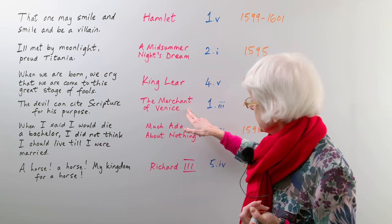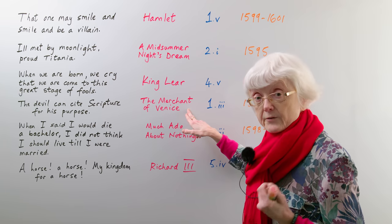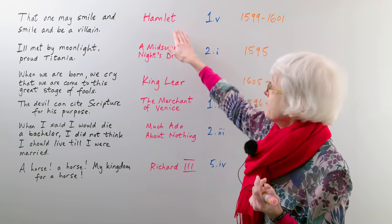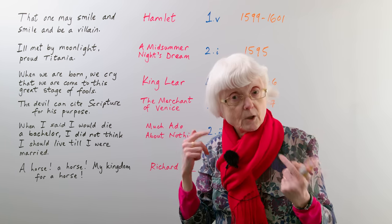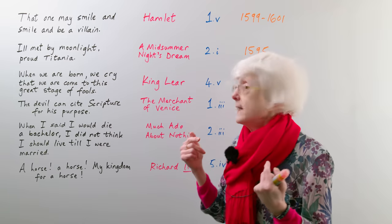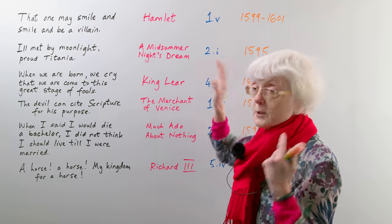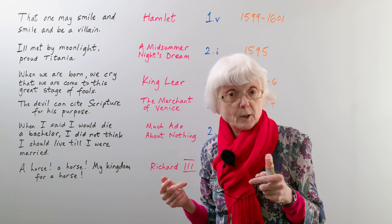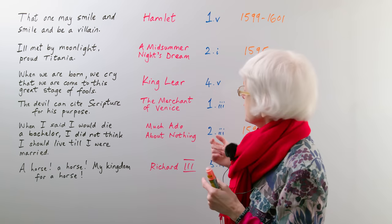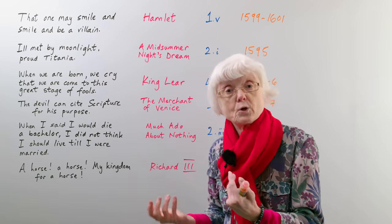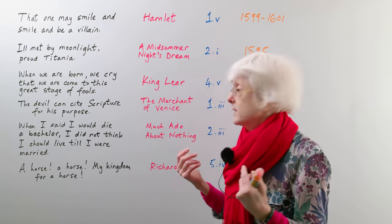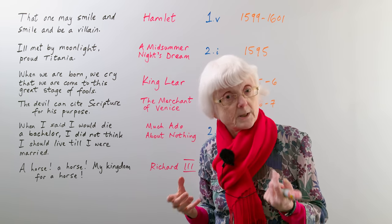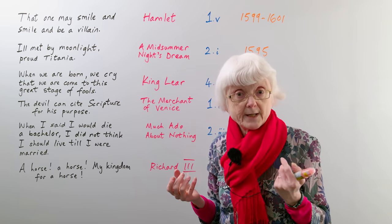Then we move on to a comedy again, although it's rather a serious comedy. The thing about Shakespeare is you could have a tragedy but it will have comic aspects in it, and you can have a comedy and it will have tragic or potentially tragic elements in it — they're not pure tragedy and pure comedy, they're a bit of a mixture. The Merchant of Venice is called a comedy, but it has quite a serious story in it.